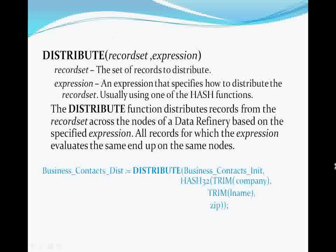Because the HPCC is a collection of servers working together in a massively parallel fashion to process your data, some operations require that all equivalent records be on the same node. The DISTRIBUTE function redistributes the record set based on the integer expression second parameter, so that every record with the same value ends up on the same node. This is usually one of ECL's hashing functions, so the result of this DISTRIBUTE will be that every record with the same company name, last name, and zip will end up on the same node together.